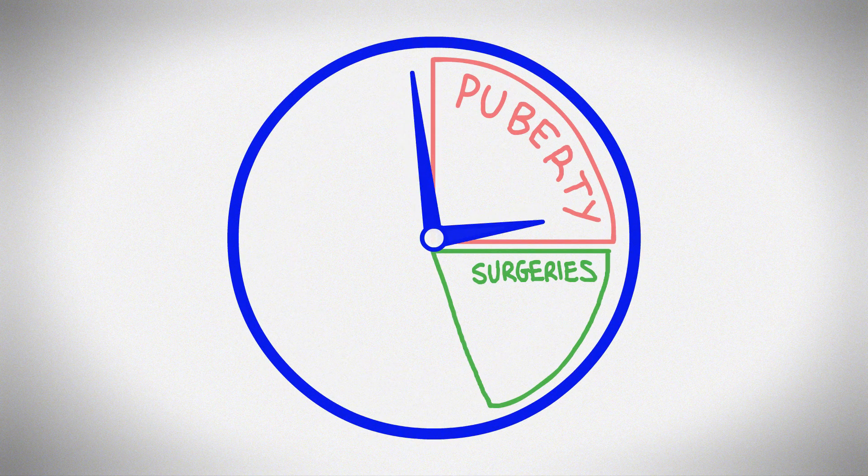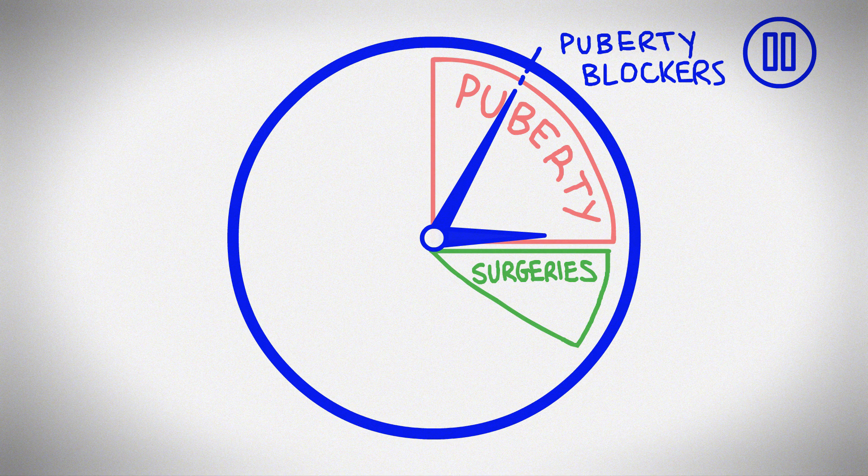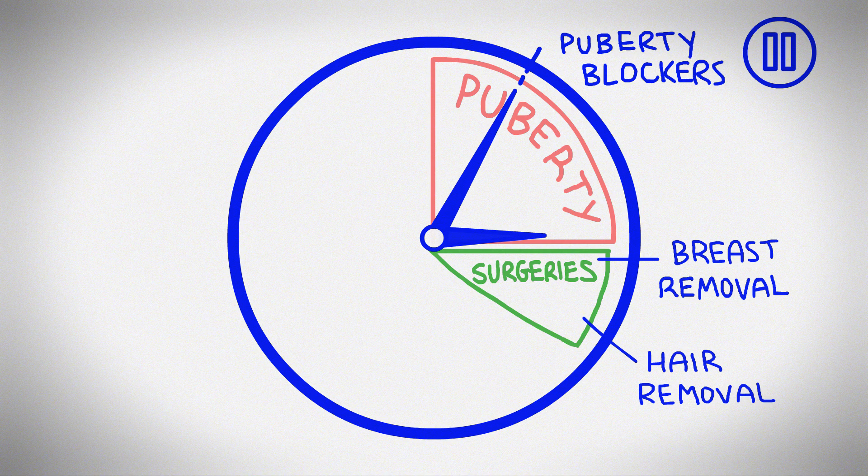For example, if started early in puberty, puberty blockers may reduce the need for future surgeries or other treatments, that is breast removal or mastectomies for transgender men, or hair removal for transgender women.